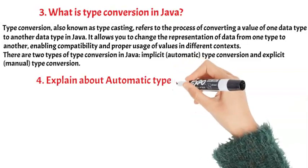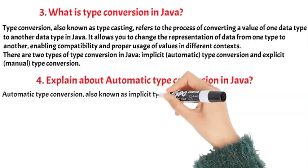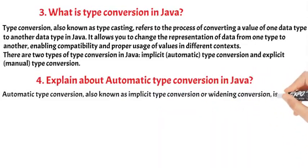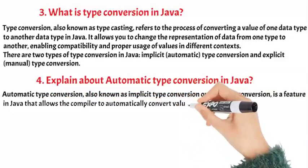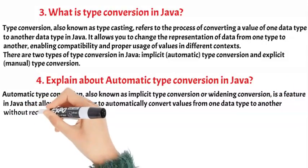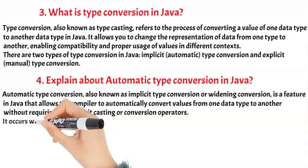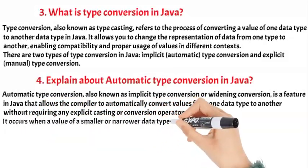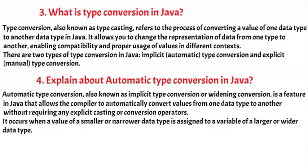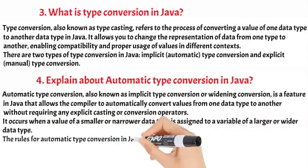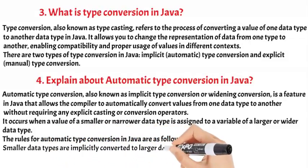Question 4: Explain about automatic type conversion in Java. Automatic type conversion, also known as implicit type conversion or widening conversion, is a feature in Java that allows the compiler to automatically convert values from one data type to another without requiring any explicit casting or conversion operators. It occurs when a value of a smaller or narrower data type is assigned to a variable of a larger or wider data type. The rules for automatic type conversion in Java are as follows: smaller data types are implicitly converted to larger data types.